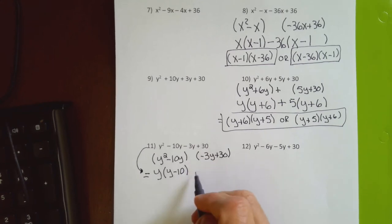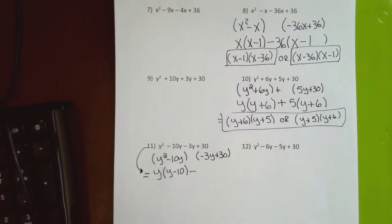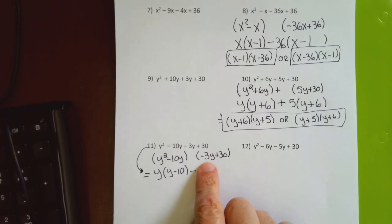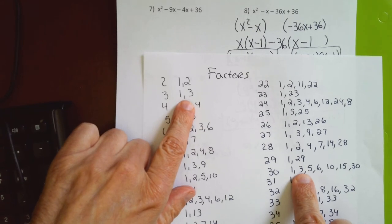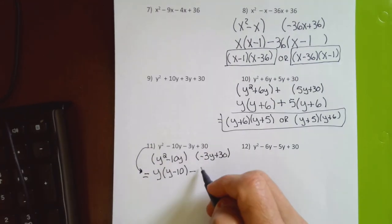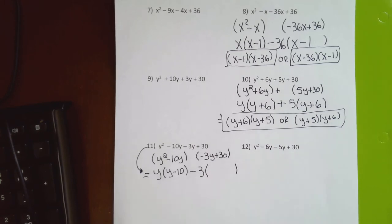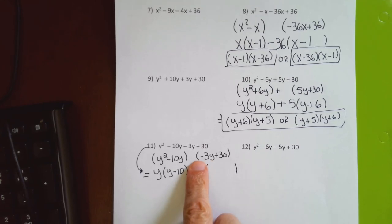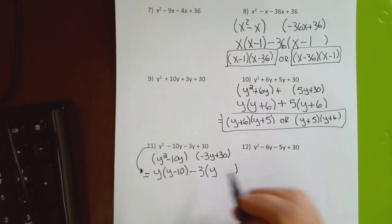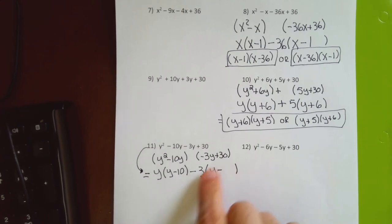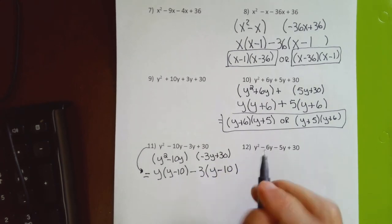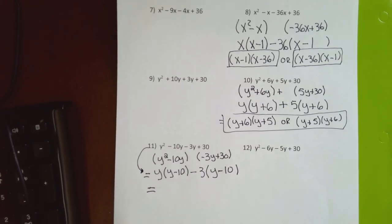The common factor between 3 and 30 is 3, but I factor out negative 3 because the first term is negative. I flip the signs and divide by 3: 3 ÷ 3 = 1 (the negative flips to positive, leaving y), and 30 ÷ 3 = 10 (the positive flips to negative). I probably should write equal signs more consistently throughout.